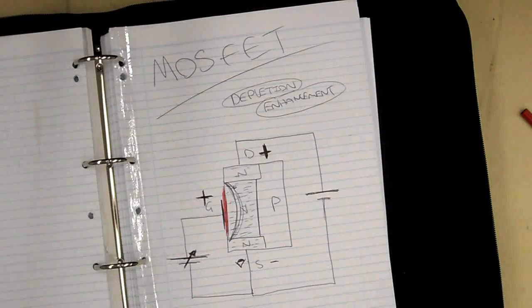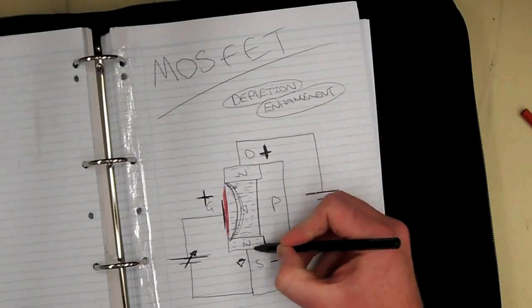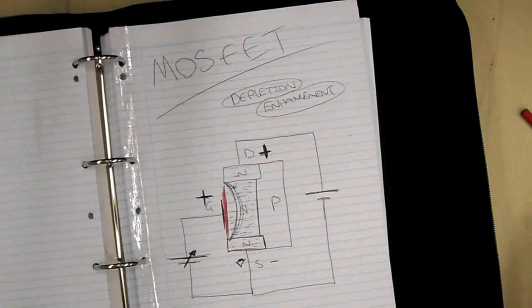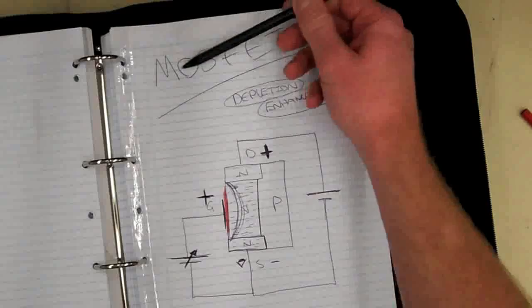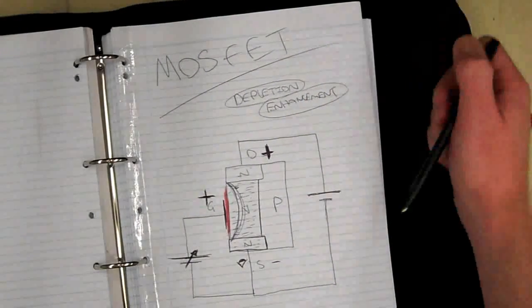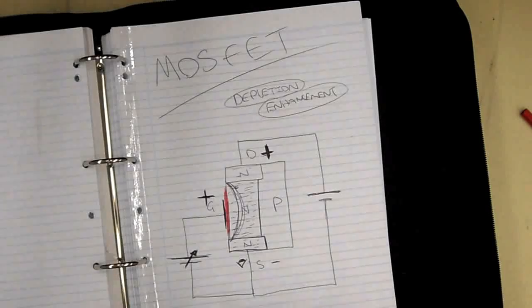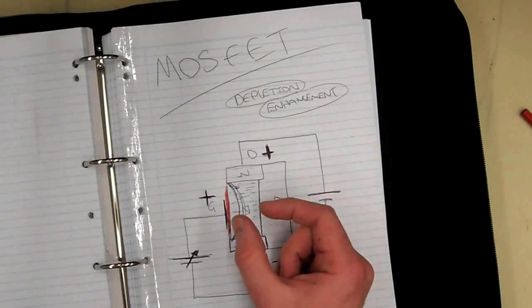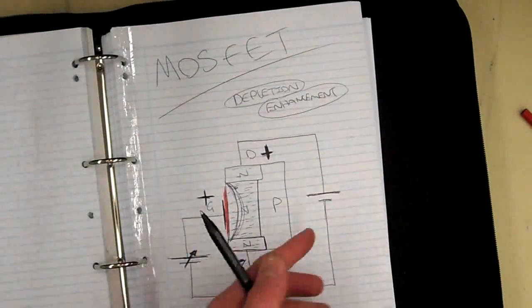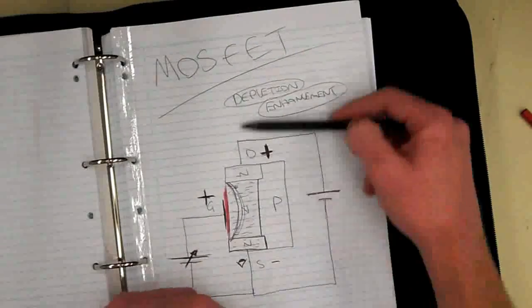I don't really have analogies for the Depletion Enhancement MOSFET like I did for the BJT and JFET, but in my experience just explaining it this way, people seem to get what's going on. To recap: MOSFETs — Metal Oxide Semiconductor Field Effect Transistor. This one is the Depletion Enhancement type. We can either deplete the channel by putting a negative on the gate for an N-channel, repelling electrons and making the channel smaller, or we reverse the supply to operate in enhancement mode, making the channel more attractive to electrons so we get more current flow.